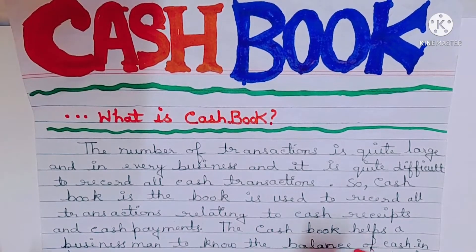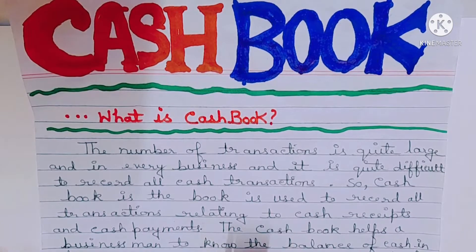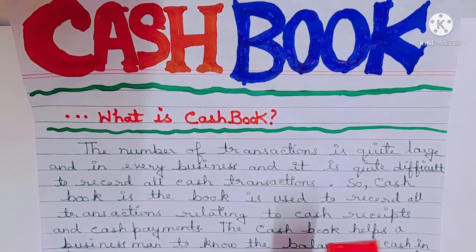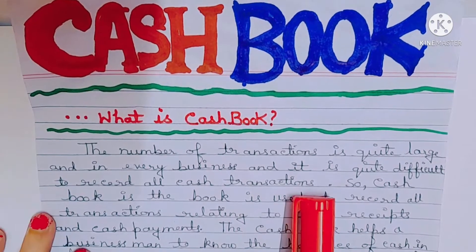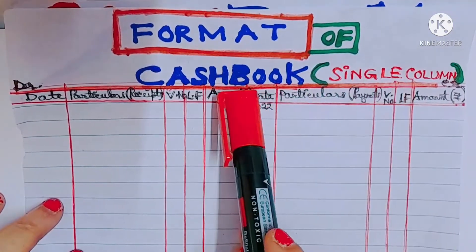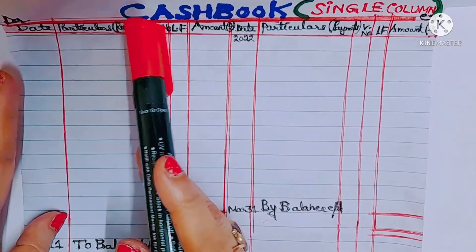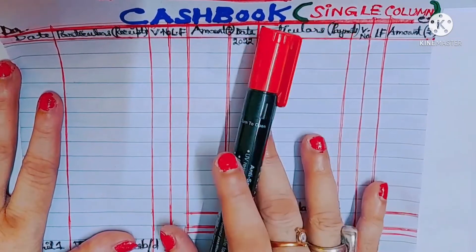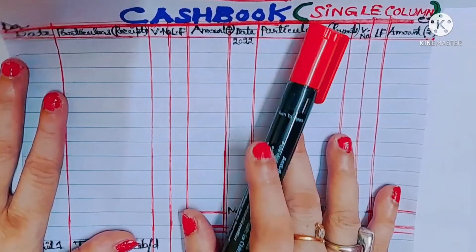Cash book helps the businessman to know balances at any time. If you deduct the total payments from the total receipts, you will get the closing cash — that is, cash in hand or cash at bank. When you see the format of the cash book, you will understand better. Cash book is nothing but a cash account. We have already done ledger.